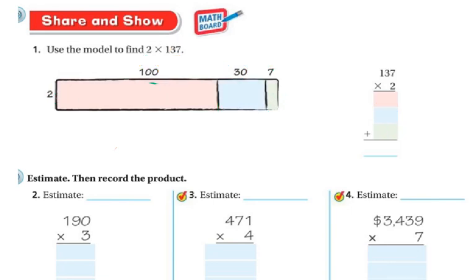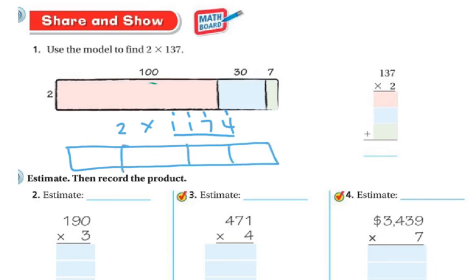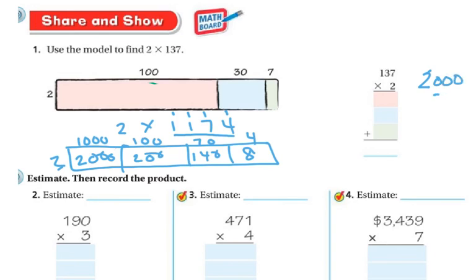I want to show you something quickly to make sure I'm clear. Let's say this was 2 times 1,174. Since this has 4 place values — the ones, the tens, the hundreds, and the thousands — I would break this one up into 4 parts. So this would be my thousands: 1,000; this would be my hundreds: 100; this would be my tens: 70; this would be my ones: 4. And I'd be multiplying by 2. So 2 times 1,000 is 2,000; 2 times 100 is 200; 2 times 70 is 140; 2 times 4 is 8. Then I would add those up — 2,000 plus 200 plus 140 plus 8 — and that would give me my answer.